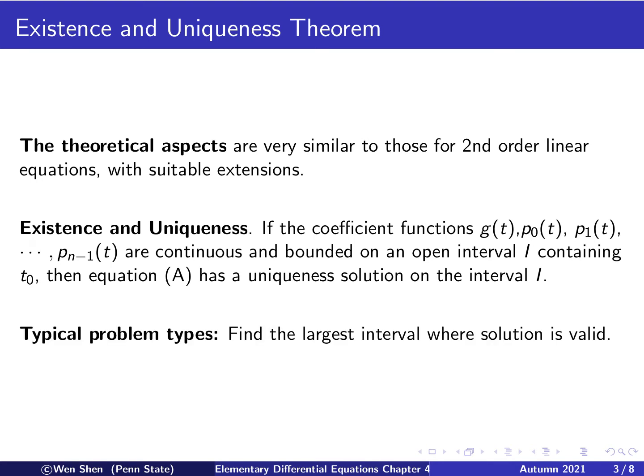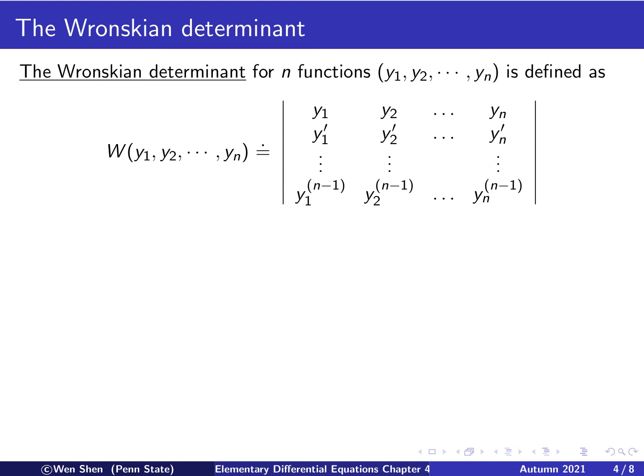A typical homework or test problem may ask you to find the largest interval where the solution is valid. Recalling the second-order equation, we introduced a concept called the Wronskian for two functions y_1 and y_2, which is useful to determine the linear dependency of those two functions. Here we have order n, so now we introduce the corresponding concept: the Wronskian determinant for n functions y_1, y_2, y_3, all the way to y_n.